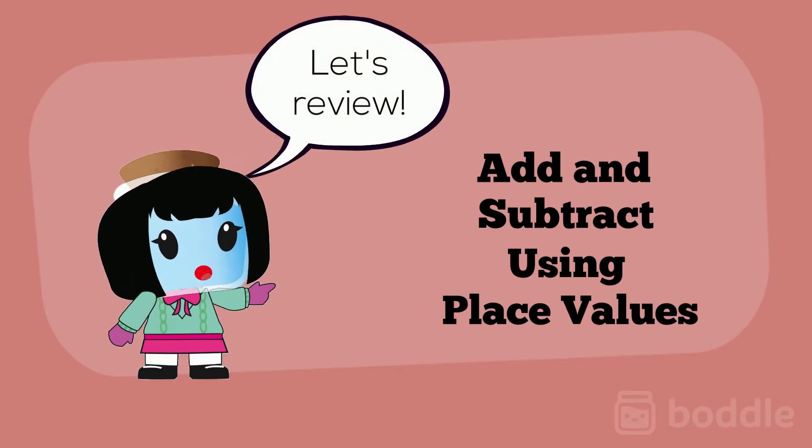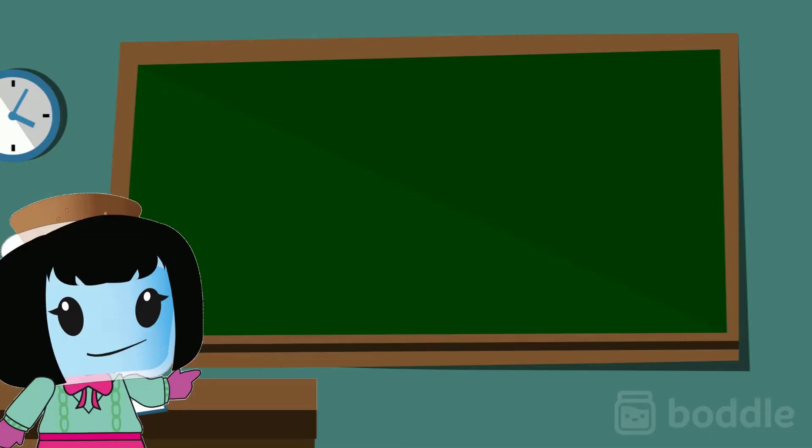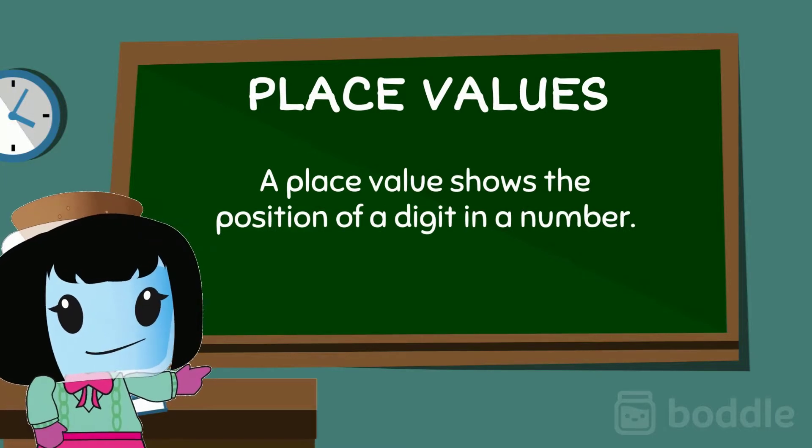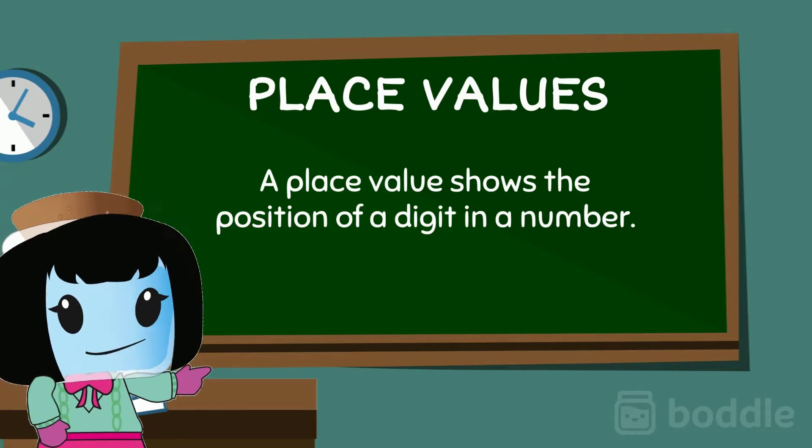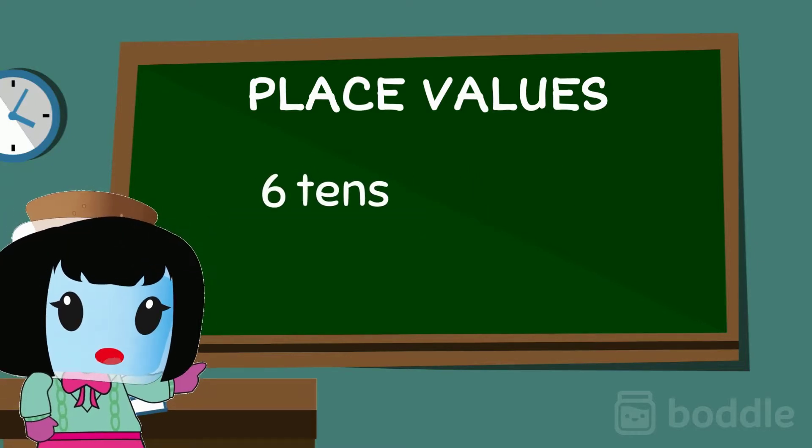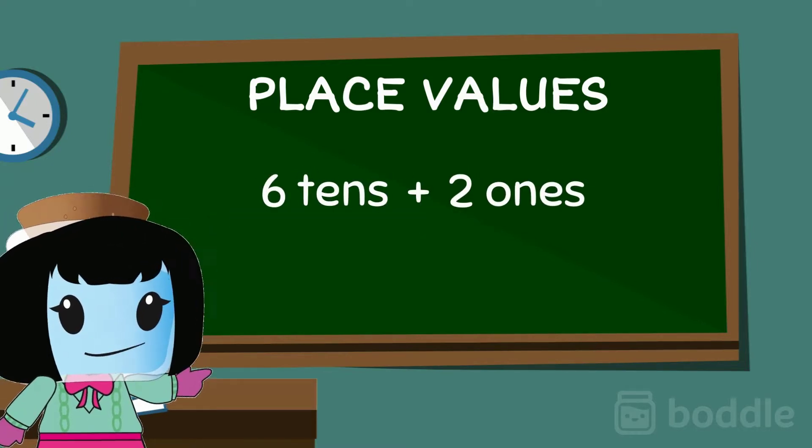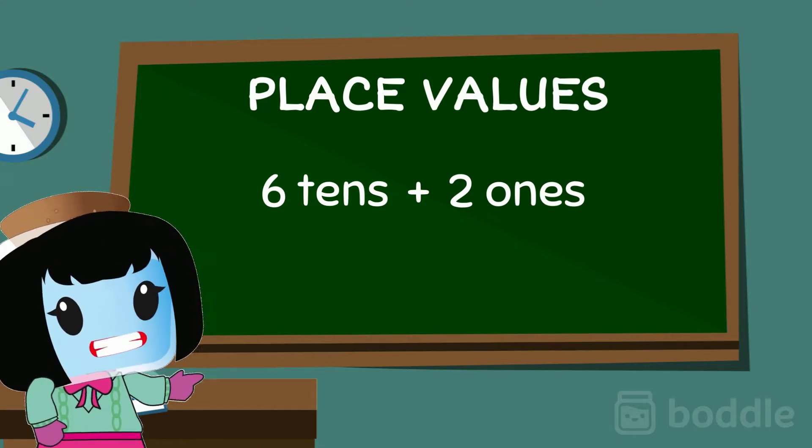Let's do a quick review on place values. A place value shows the position of a digit in a number. So let's say the number has six tens and two ones. That number is 62.